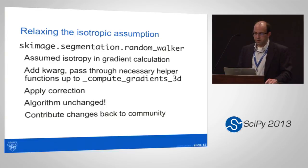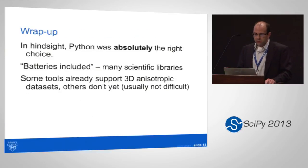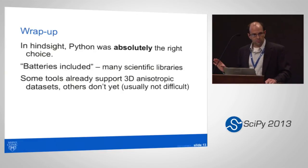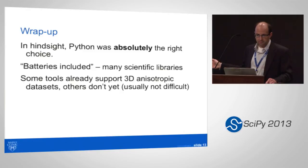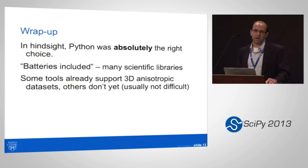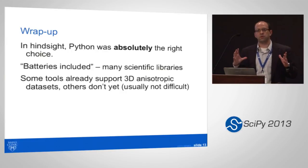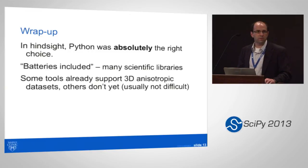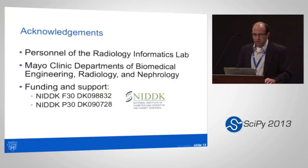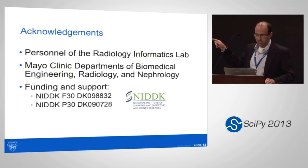I contributed those changes back to the community and have become more active in scikit-image since then, which has been a wonderful community. To wrap up: in hindsight, Python was definitely the right choice for our lab at Mayo. The batteries-included scientific libraries are wonderful. Some tools already include support for anisotropic data, others don't yet, but usually it's not hard. Much of my effort has been in relaxing these isotropy assumptions across different Python libraries. Huge thanks to NIDDK and NIH for their support. Happy to answer questions.